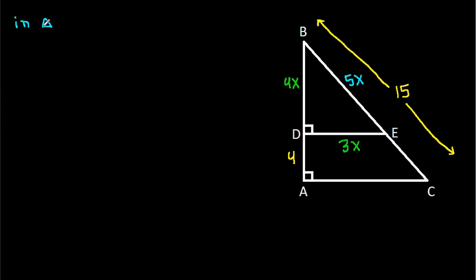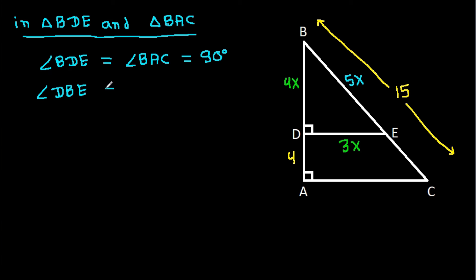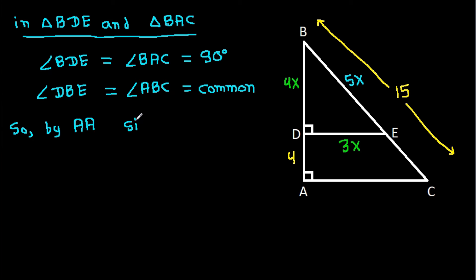Now, in triangle BDE and triangle BAC: angle BDE is equal to angle BAC, that is 90 degrees, and angle DBE is equal to angle ABC, that is common. So by angle-angle similarity, triangle BDE will be similar to triangle BAC.